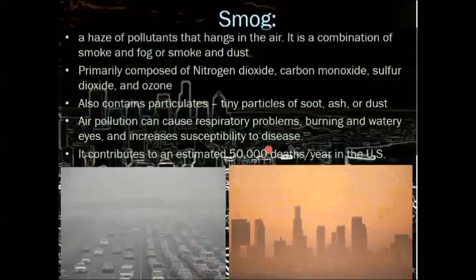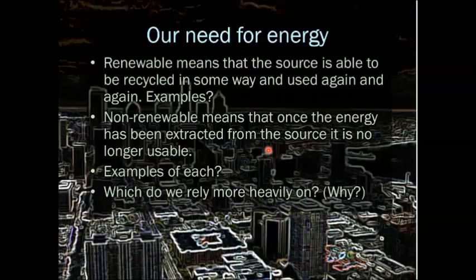We want clean air just like we want clean water. So now we're going to talk about the ways in which we use energy, the types of energy we use, and the byproducts of those. We can really break energy down into two groups — renewable or non-renewable. Renewable means that the source is able to be recycled in some way or that it never uses up. Non-renewable means that we can use it faster than it will replenish itself — it might be able to be replenished but it takes millions of years.